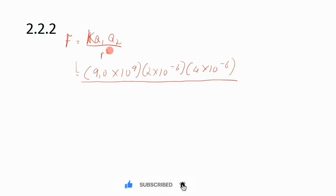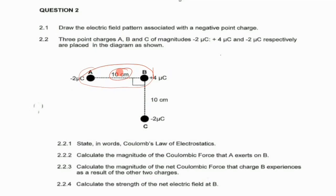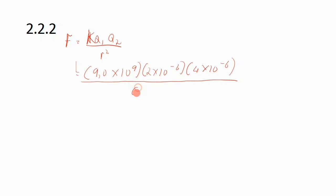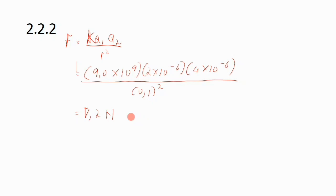Feel free to pause the video to check those values. For r, we have 10 centimeters, which we convert to meters by dividing by 100, giving 0.1 meters. We substitute r = 0.1 m, so r² = (0.1)². Punching this into the calculator gives 7.2 Newtons. The negative and positive signs only tell you the force is attractive. Since we are asked for the magnitude, the answer is 7.2 Newtons.